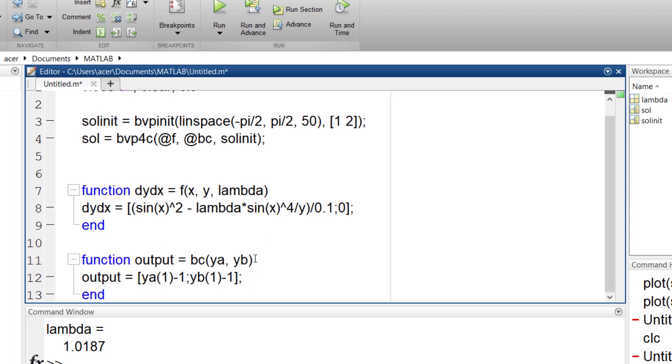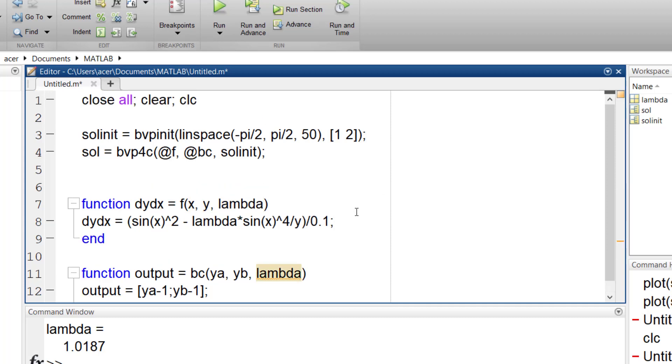Then, I must also add this constant to my bc. yA and yB are no longer vectors. They are simply the values for y at the boundaries. Also, for my initial guess, I must enter y and lambda separately.